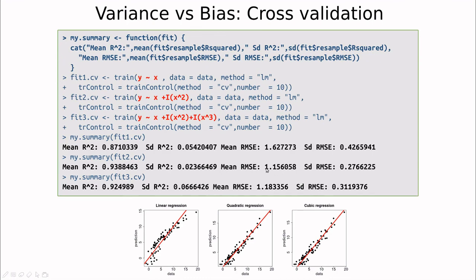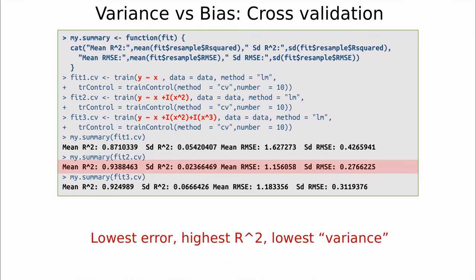So overall, the quadratic one is the one which provides the lowest error and the lowest variance in the error, and the highest correlation and the lowest variance in the correlation. So clearly the winner is this one. So in summary, the quadratic fitting is the one who produces the lowest error, the highest r squared, and the lowest variance.